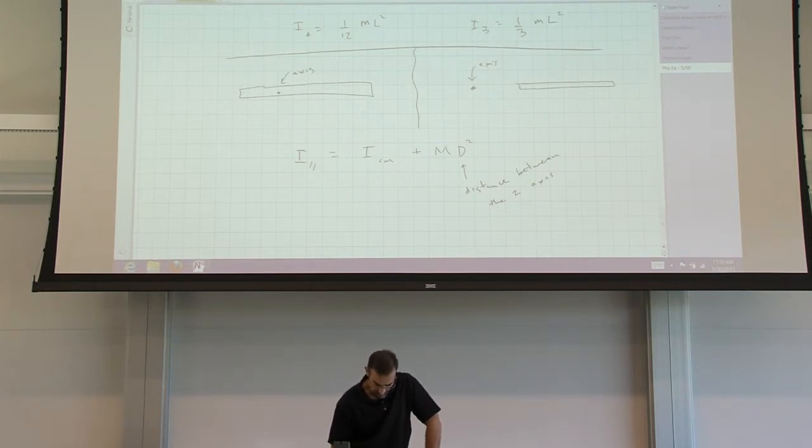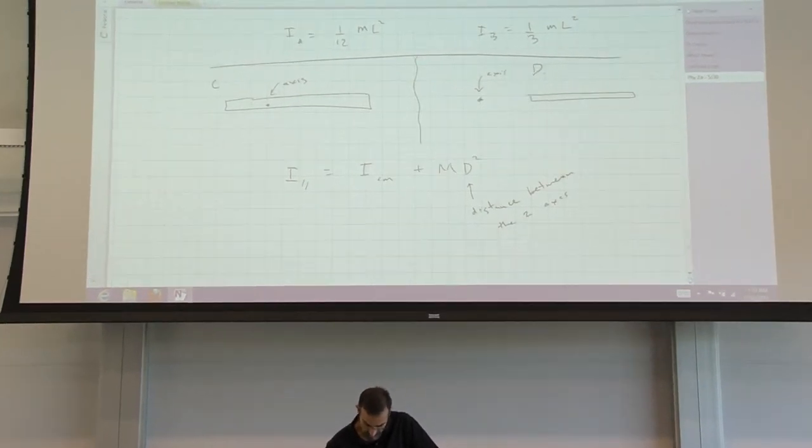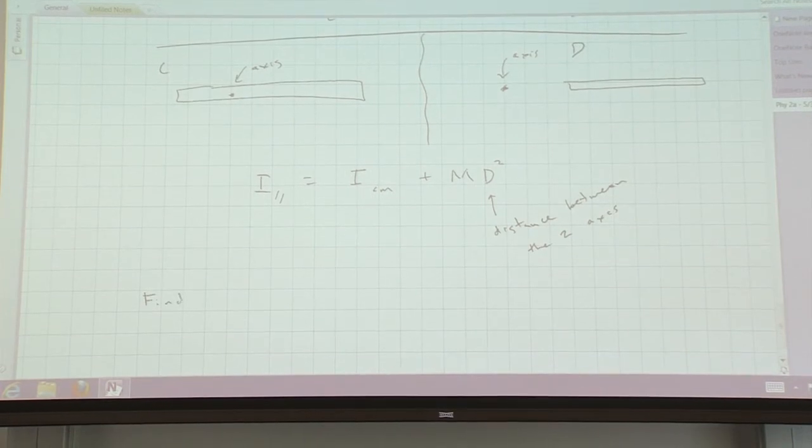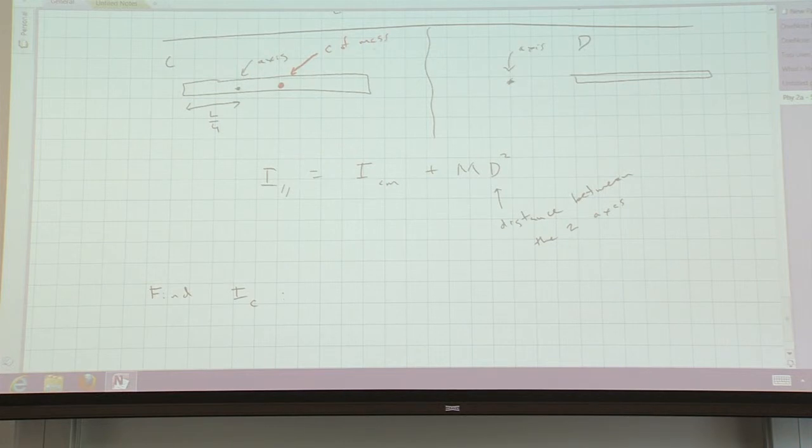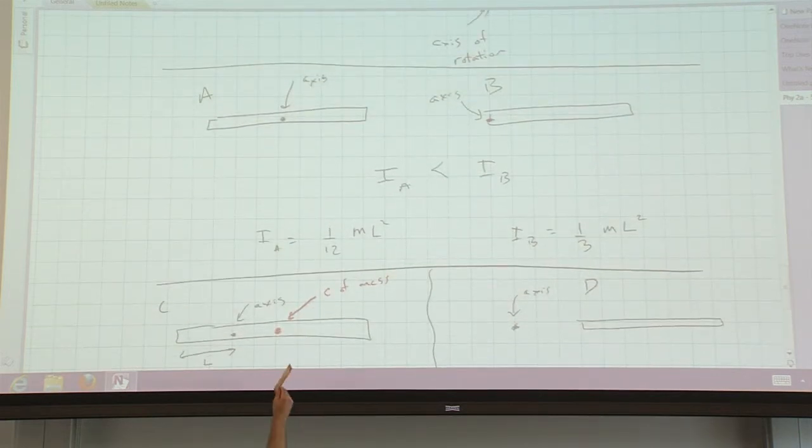Okay, so let's look at the first case. Let's do C and D, we'll call them. Let's do C. So let's make this L over 4. So we know the center of mass is here. The center of mass is there. Our axis of rotation is the black dot.